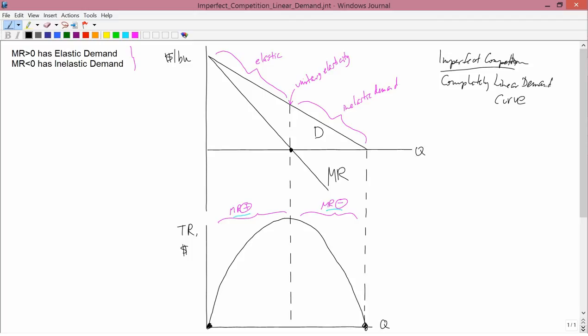In other words, for a linear demand curve, the marginal revenue curve is also a straight line. It hits the Q-axis halfway between zero and where the demand curve hits the Q-axis, which means it has exactly twice the slope. So for a completely linear demand curve, the marginal revenue curve has the same intercept as the demand curve and twice the slope.